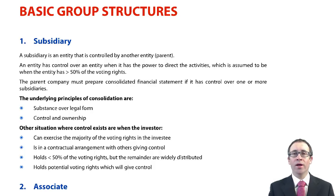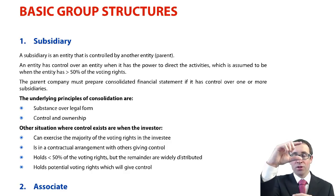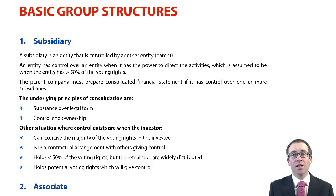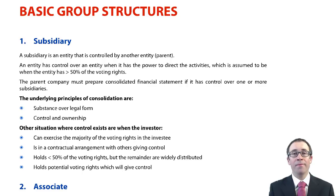This chapter is all about looking at basic group structures. It recaps what you've seen from F7 with regards to the statement of financial position and the statement of profit or loss and other comprehensive income of a group, by looking at a simple group structure whereby we have a parent, a subsidiary, and then an associate that sits just outside of the group. It's important that you grasp a good understanding of this before moving on to the more complex aspects of group accounts within P2.